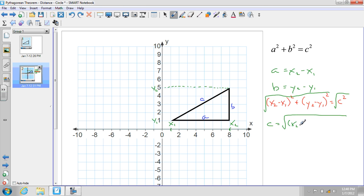x sub 2 minus x sub 1 squared plus y sub 2 minus y sub 1 squared. And we will recognize that as the distance formula.